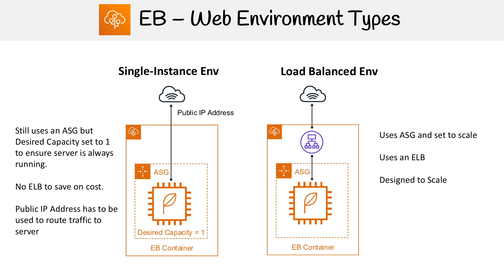The other case is you can set up a single instance environment. This one is extremely cost effective because you're only running a single server, but you still use an auto scaling group — because auto scaling groups are great not just for scaling but for keeping even a single server running. The desired capacity is always set to one, and there is no elastic load balancer, which is just to save on costs.